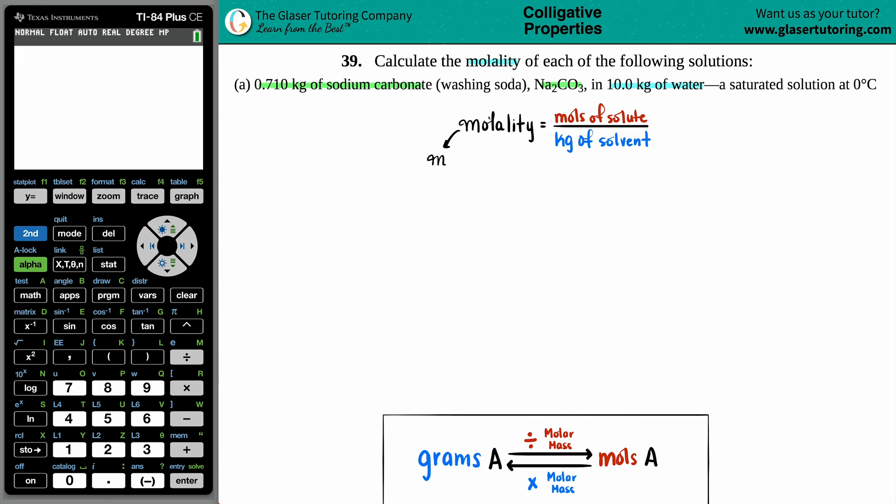This just equals the moles of the solute divided by the kilograms of the solvent. But the problem here is that I don't know which one is the solute and which one is the solvent. But with the wordings, we can figure it out. Keep in mind that the solute is always the smaller thing. It's usually a solid that is being placed into the solvent. So your solute always goes in the solvent.